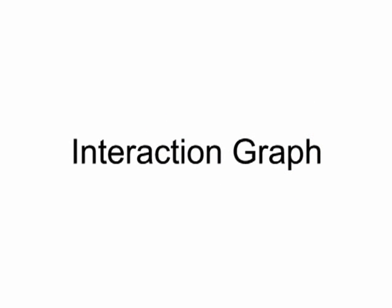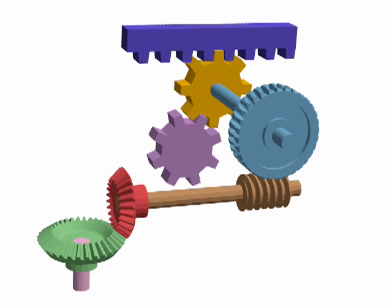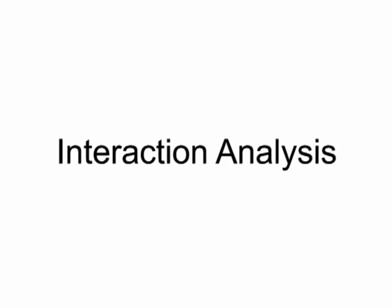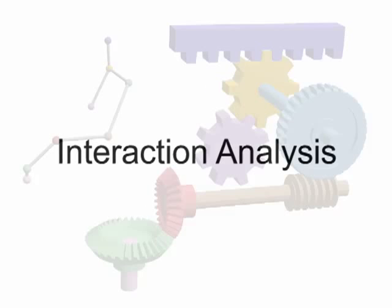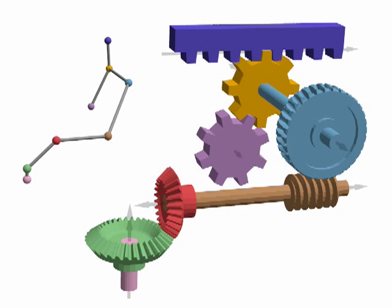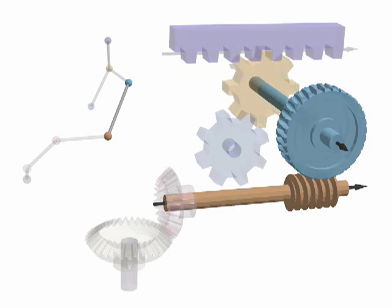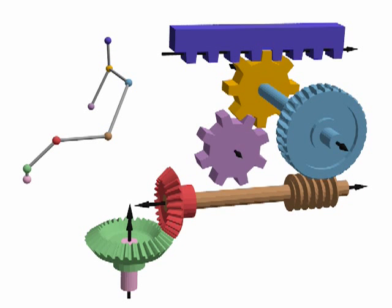We organize the motion relations using an interaction graph, where nodes represent individual parts and edges are mutual contact relations. Using the contact and per-part symmetry information, we classify motion interactions between parts into types, including cylinder on cylinder, bevel gear, coaxial, worm gear, and cylinder on plane. For details, please refer to the paper.